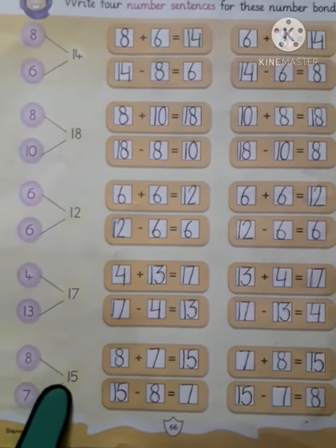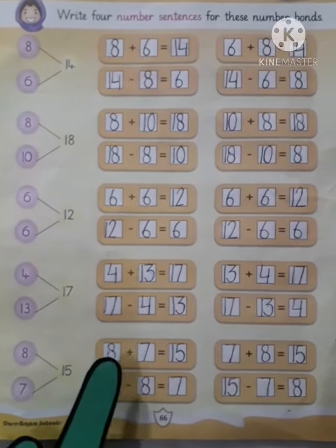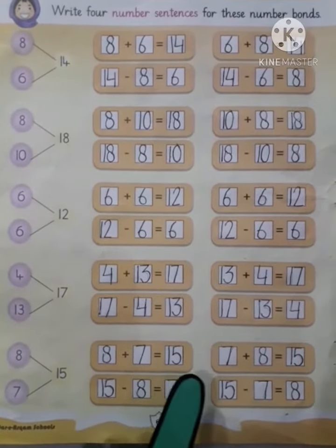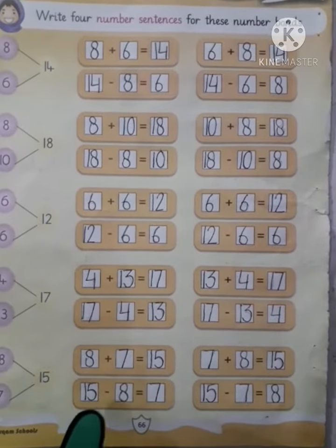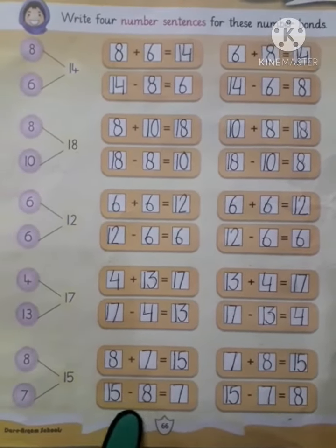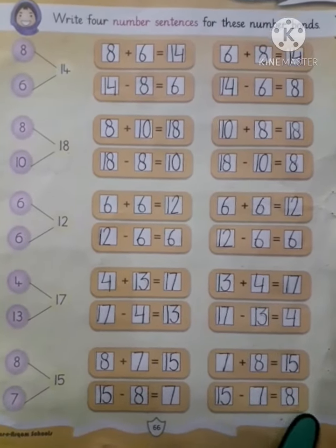Next, the whole number is 15. One part is 8, the other part is 7. 8 plus 7 equals 15, and 7 plus 8 equals 15. Now do subtraction: 15 minus 8 equals 7, and 15 minus 7 equals 8.